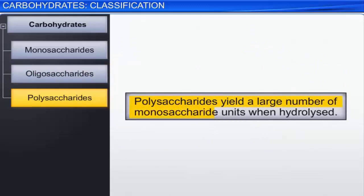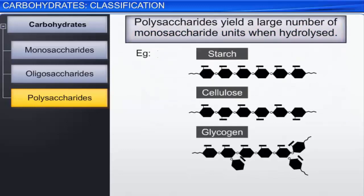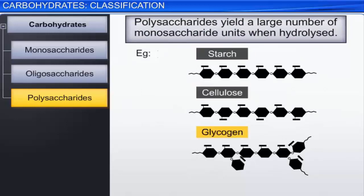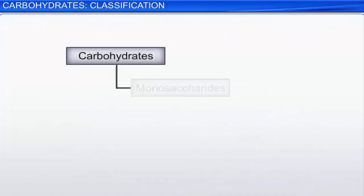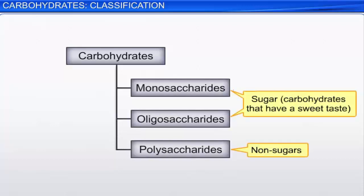Polysaccharides yield a large number of monosaccharide units when hydrolyzed. Polysaccharides, which include starch, cellulose, glycogen, and many gums, do not have a sweet taste; hence they are referred to as non-sugars. We often use the term sugar to refer to carbohydrates that have a sweet taste. In general, monosaccharides and oligosaccharides are sweet in taste and are therefore referred to as sugars.